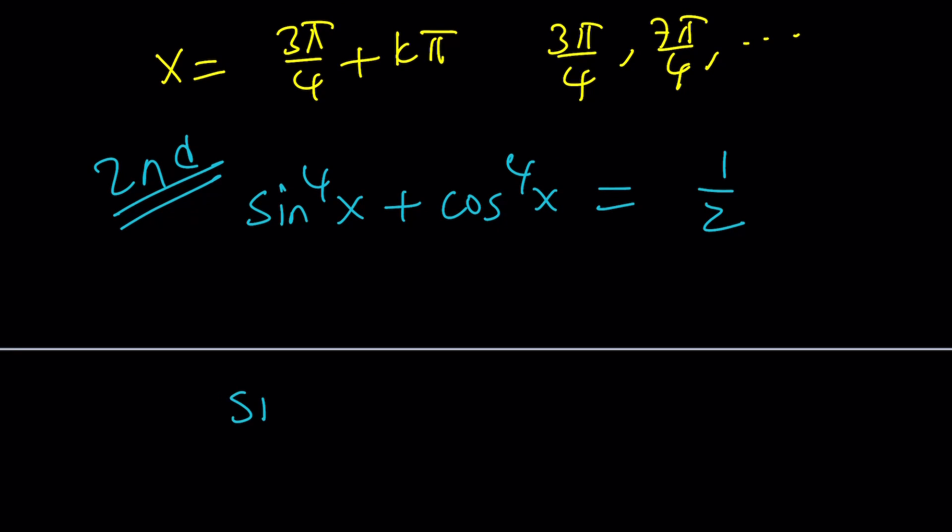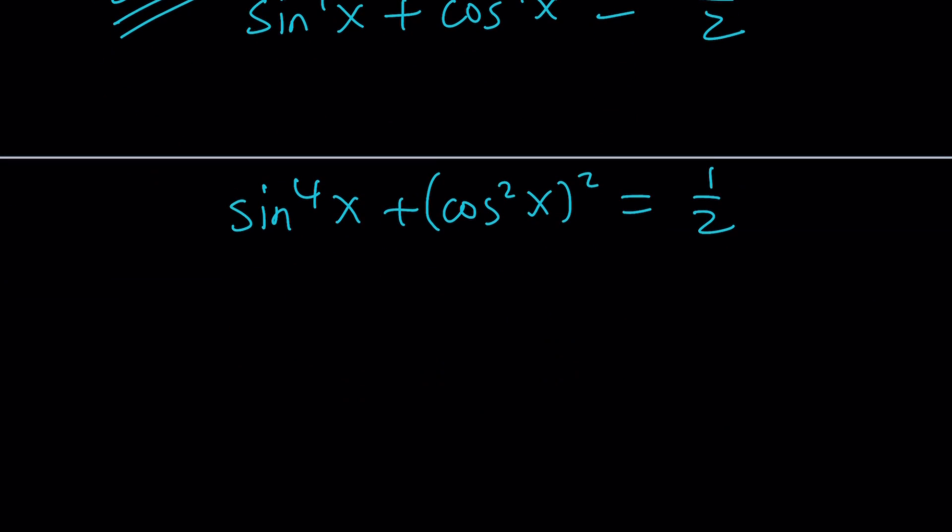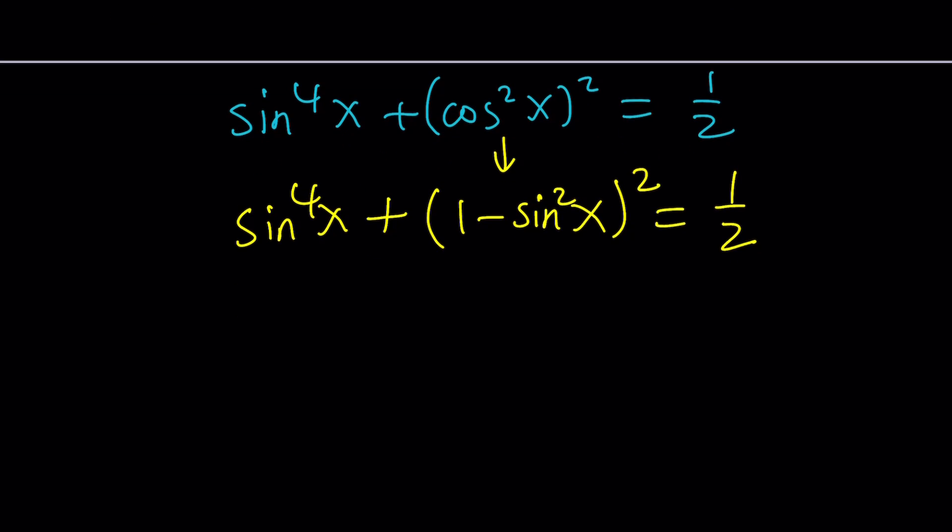But we could also do it differently. We can just kind of write it the same way. Let this be sine x to the fourth power. And then write this as cosine squared squared. But this time, instead of using the double angle formula, use the Pythagorean identity. Since sine squared x plus cosine squared x equals one, cosine squared x can be replaced with one minus sine squared x. And of course, that'll be squared and then added to the fourth power. And this is going to give us another equation, which is going to be quartic, but bi-quadratic.